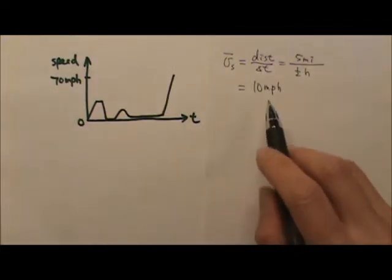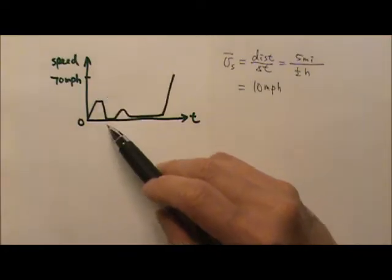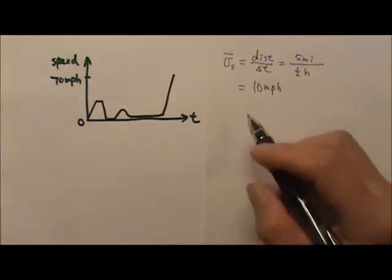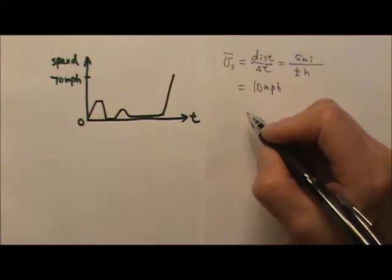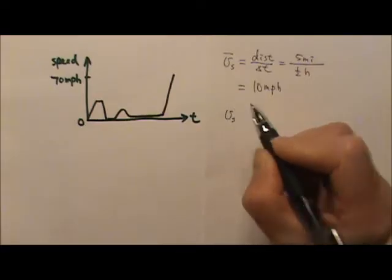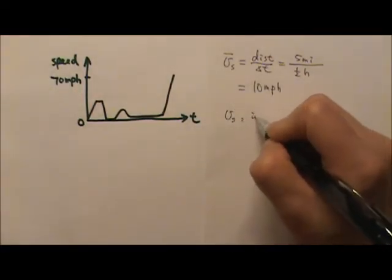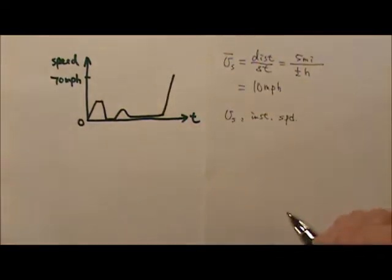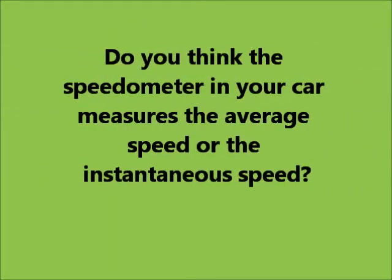But this information does not tell you how her speed changes at various moments. The speed at a certain moment is called instantaneous speed. We write V sub S without a bar on the top. And this is the instantaneous speed. Do you think the speedometer in your car measures the average speed or the instantaneous speed?